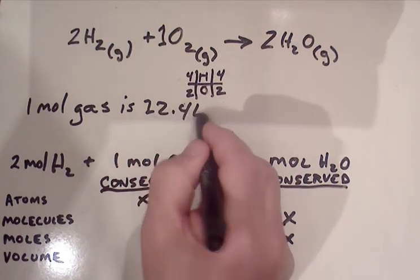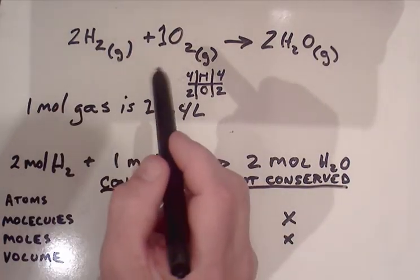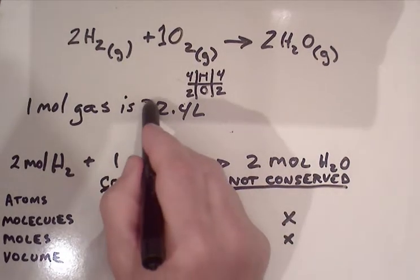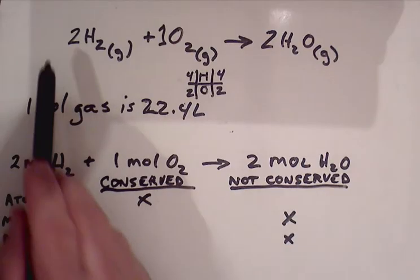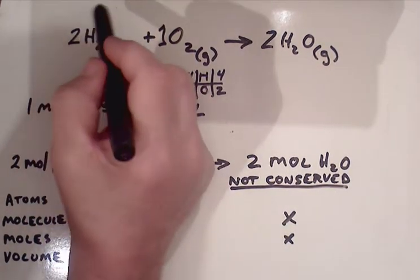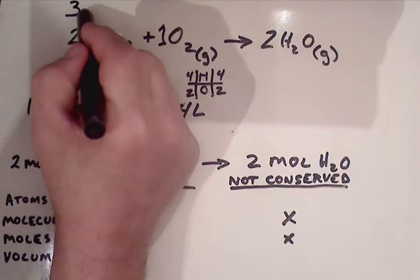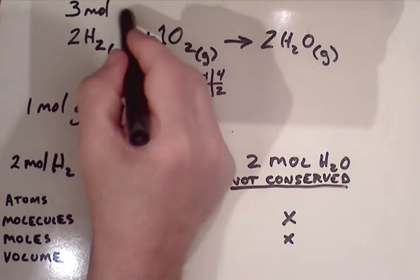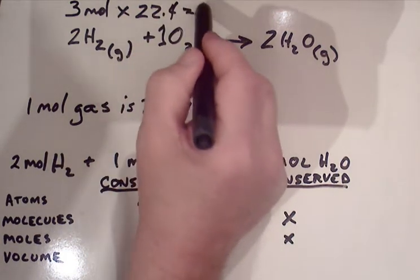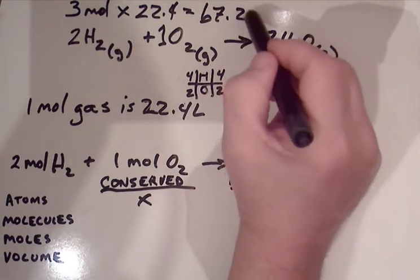We know that one mole of gas is 22.4 liters in volume. We know that we have, so three times 22.4. We have three moles on the reactant side of hydrogen and oxygen. Each mole is, one mole of gas is 22.4. If we take three moles and we multiply it by 22.4, we get 67.2 liters of gas on the reactant side.